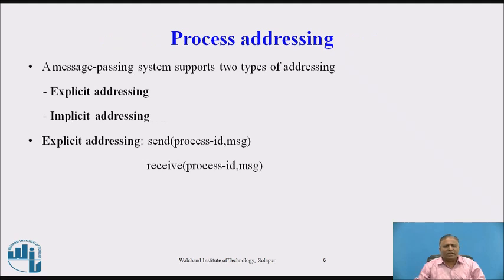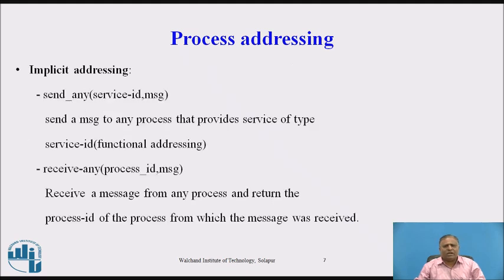Process addressing. A message passing system supports two types of addressing: explicit addressing and implicit addressing. In explicit addressing, the send primitive parameters are process ID and message, and the receive primitive parameters are receive process ID and message. In implicit addressing, the send-any syntax uses service ID and message — sending a message to any process that provides a service of type service ID. The receive-any primitive takes process ID and message, receiving from any process and returning the process ID of the sender.